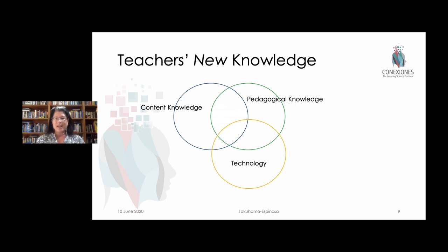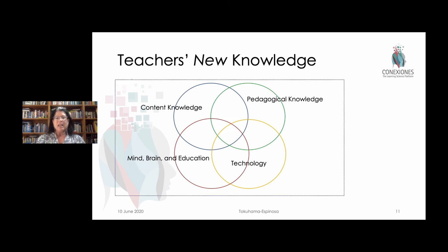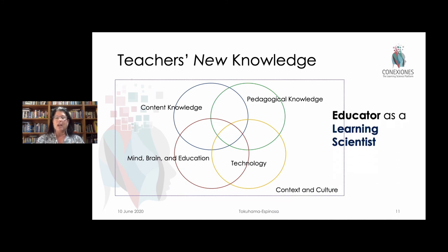On top of all of that, starting around 2007–2010, we began to add on this whole other angle: mind, brain, and education, or the learning sciences. How does the brain actually learn? And are we choosing the right kinds of pedagogical interventions, the right kinds of technology that takes advantage of that? If we put all of that into the context of the cultures that we live in, then we really have learning scientists. This was what my thesis was on — the science and the art of teaching, looking at this big grand whole scheme of things.